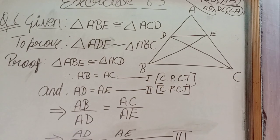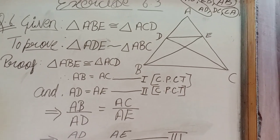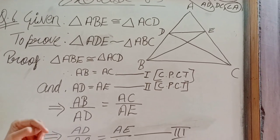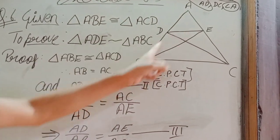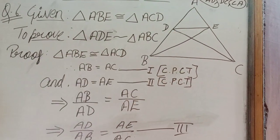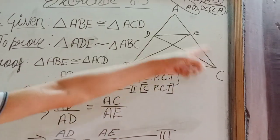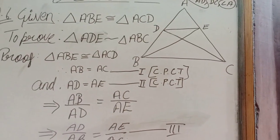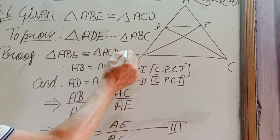Let's start. Triangle ABE, this is the one, is congruent to triangle ACD, we are given.